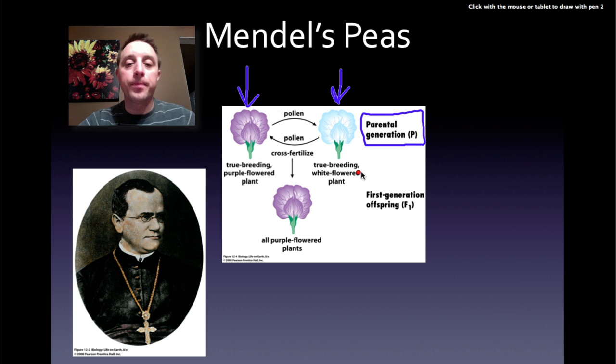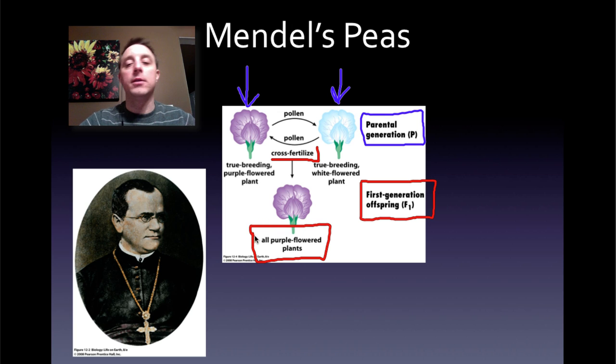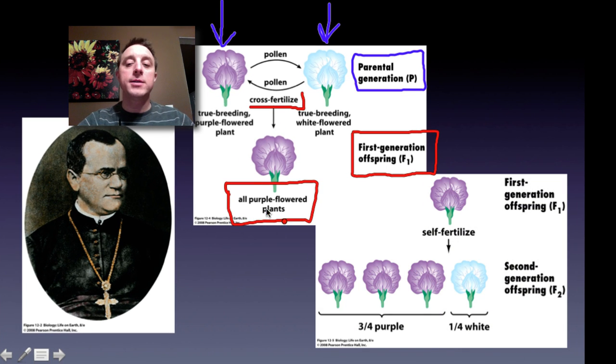So he crossed them together. He allowed them to cross fertilize. And he came up with this next generation, the first generation offspring, or F1 that he called it. And what he saw was that all of the offspring had purple flowers. No white flowers.